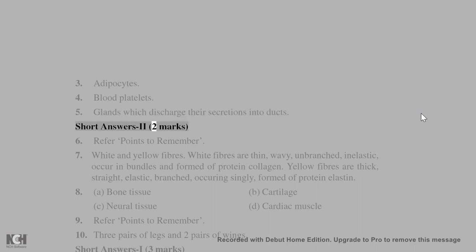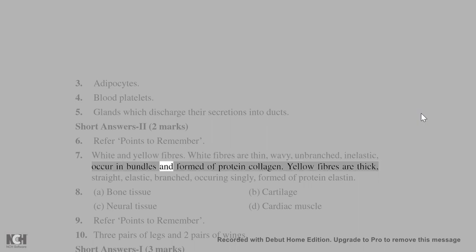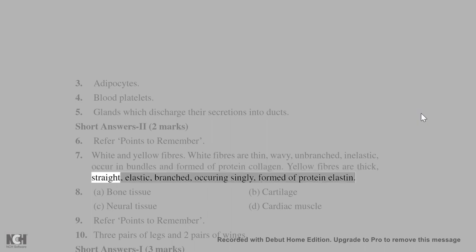Short answers 2, 2 marks: 6. Refer points to remember. 7. White and yellow fibers. White fibers are thin, wavy, unbranched, inelastic, occur in bundles, and are formed of protein collagen. Yellow fibers are thick, straight, elastic, branched, occurring singly, and formed of protein elastin.